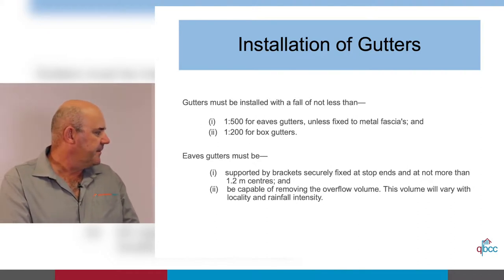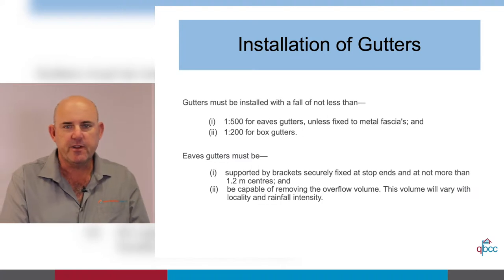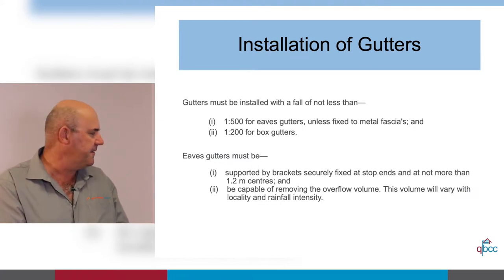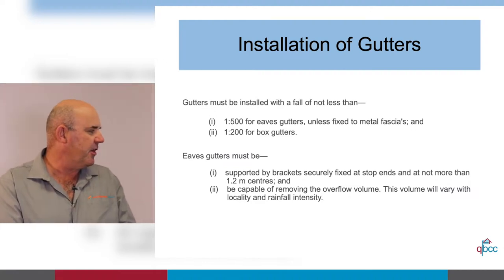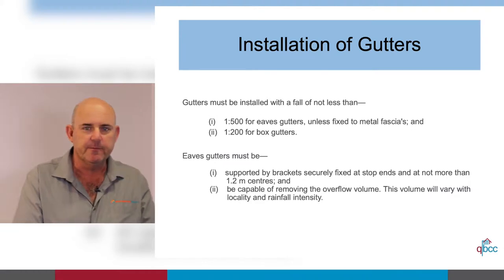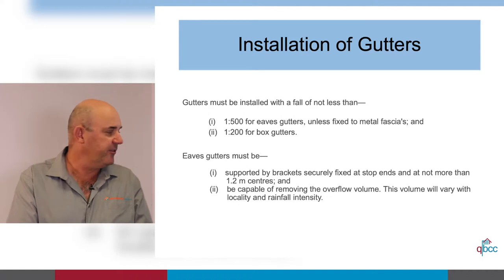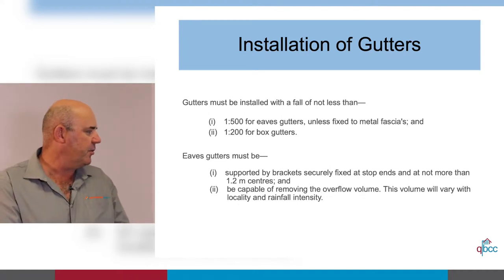Eaves gutters must be supported by brackets, securely fixed at stop ends, and have no more than 1200mm centres — that's straight out of the code. I would recommend not using any more than 900 or 950mm. These gutters must also be capable of removing the overflow volume. This volume will vary with locality and rainfall intensity, so rainfall intensity keeps coming up and it's very important to know the area that you're working in.